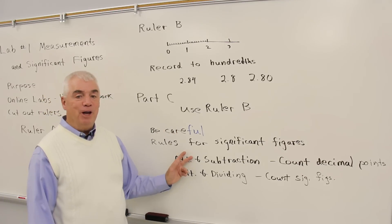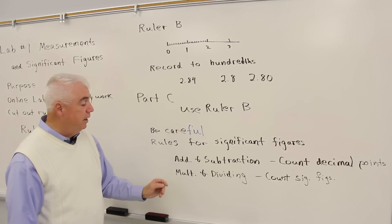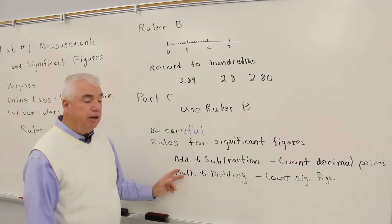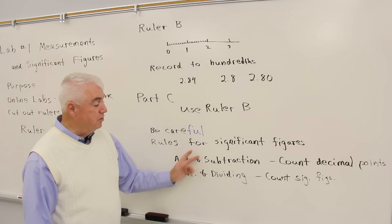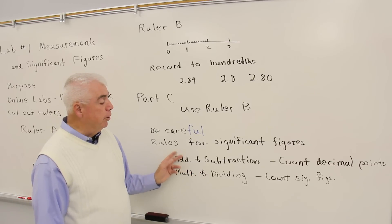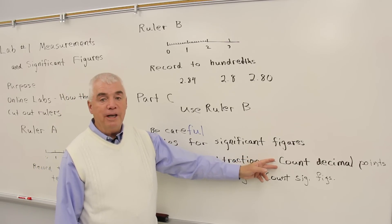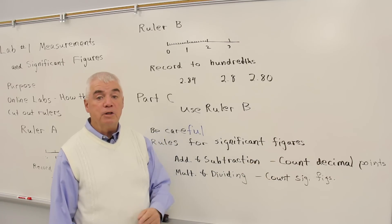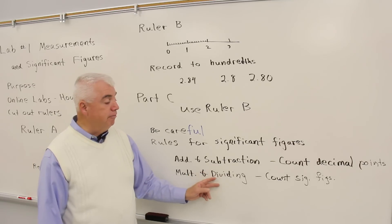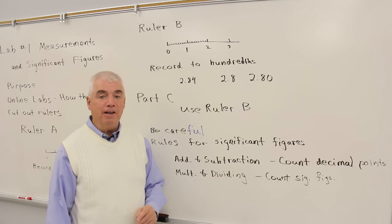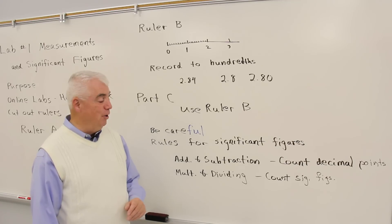Just a little bit of review now for significant figures. Adding and subtracting are different operations than multiplying and dividing, so they have different rules between these two sets of actions. When you're adding and subtracting numbers, you count decimal points, and the lowest number of places wins. When you're multiplying and dividing, you count significant figures, and the lowest number is the one that you use.